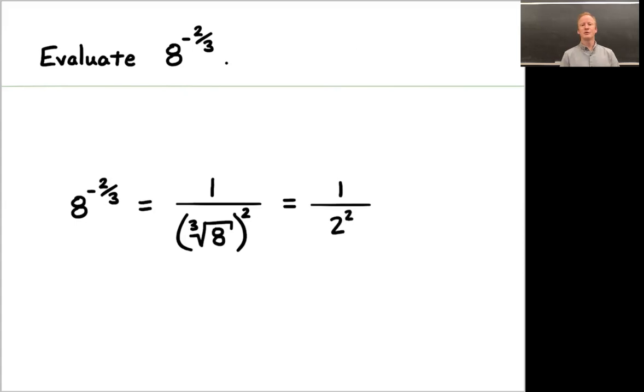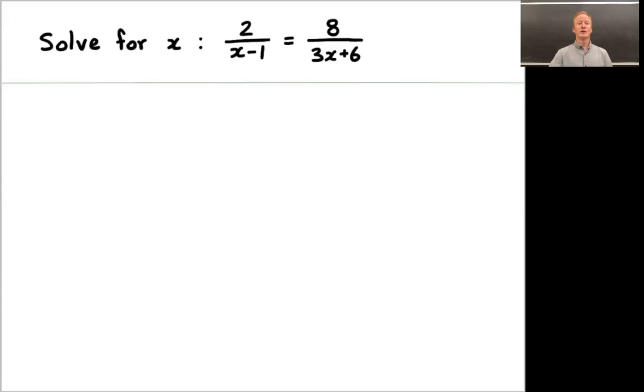So you have 2 squared, which is 4, in the bottom of a fraction underneath 1. That is, 8 to the minus 2 thirds is 1 quarter. And that's the solution for that problem. Let's move on to another problem.